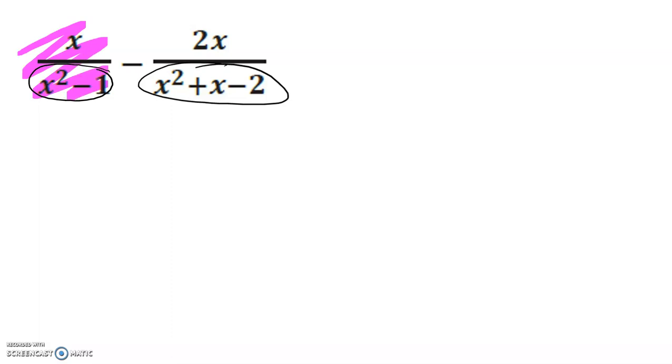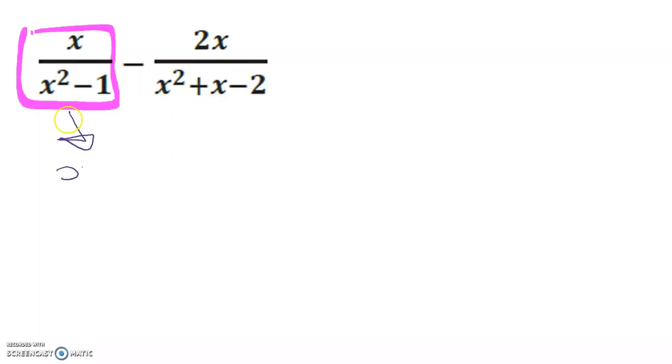First I'm going to rewrite this left hand side with a factored denominator. That's going to be x over (x-1)(x+1) because x²-1 is a difference of two squares.